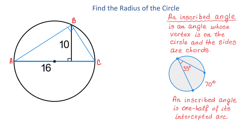In our problem, the intercepted arc measures 180 degrees. Therefore, the inscribed angle is half of 180, which is 90 degrees. So we can say that triangle ABC is a right triangle.